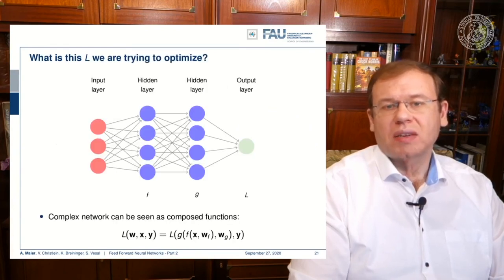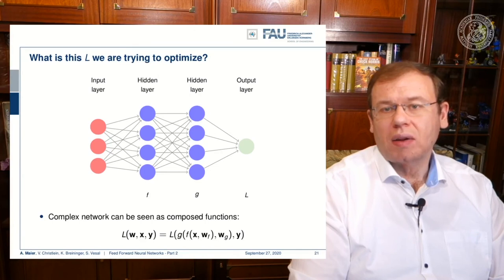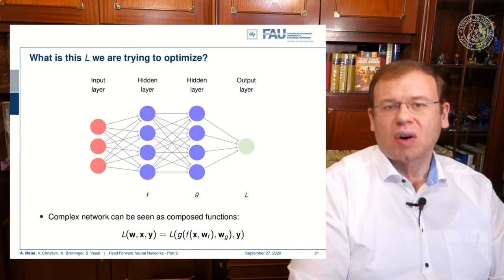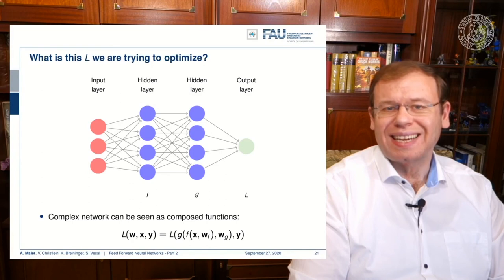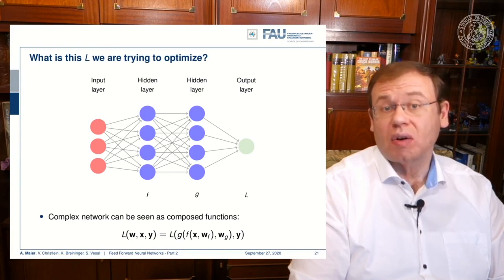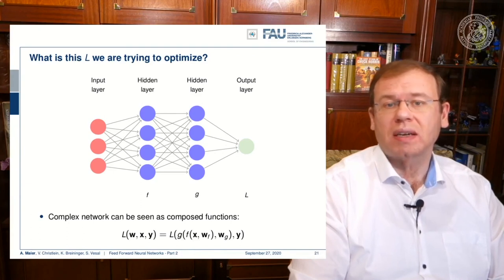So what is this L that we're trying to optimize? Well L is computed here at the very output layer. So we put in the input into our network, process with the entire network, then in the end we compute essentially the difference or the fit or the loss to our desired output.